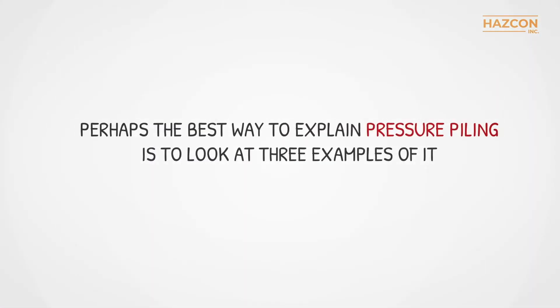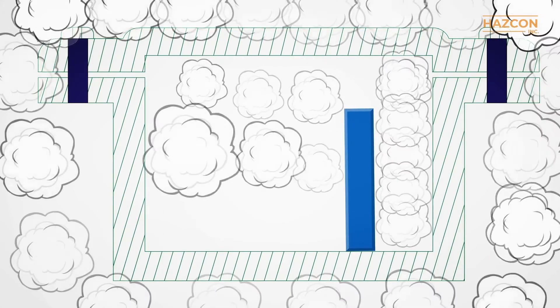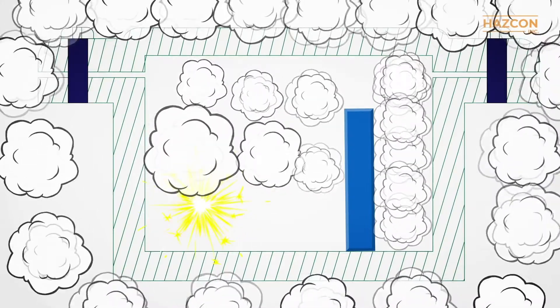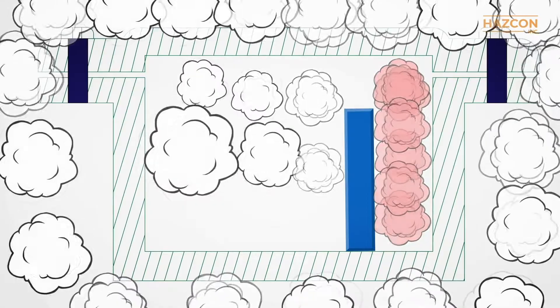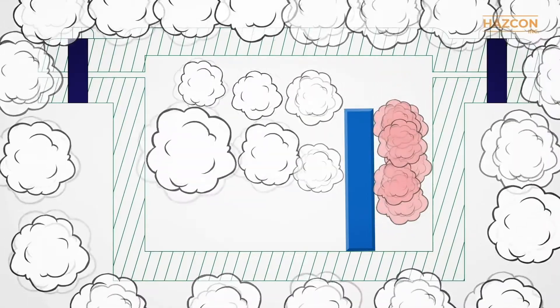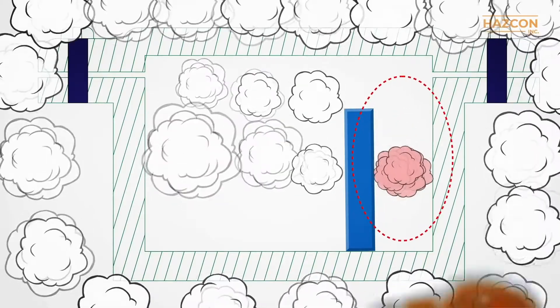Perhaps the best way to explain pressure piling is to look at three examples of it. In our first example, the design of an explosion-proof enclosure with two or more compartments allows unburned gas to collect in a particular space within the enclosure. The unburned gas in this space becomes compressed and therefore highly pressurized before being ignited. This pressure piling effect will lead to a higher explosion pressure.